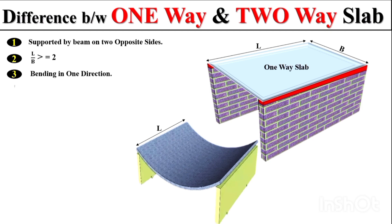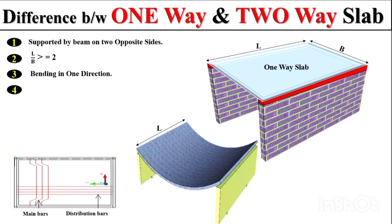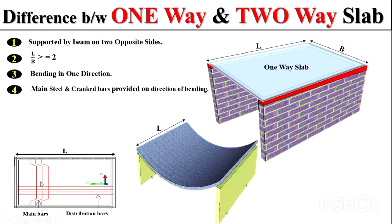In a one-way slab, the slab bending is in one direction. In the direction of this bending, we normally provide the slab main reinforcement and crank bars. As you can see here, this is the reinforcement of a one-way slab, where the main reinforcement is provided along the direction of bending.